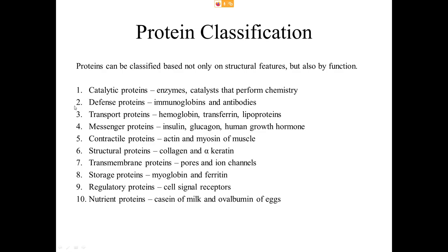Third: transport proteins — they carry things around, like hemoglobin and lipoproteins, which carry lipids in the blood because lipids are not water-soluble and need someone to carry them. Fourth: messenger proteins — protein-based hormones like insulin, glucagon, and growth hormone, which send signals from one cell or area of the body to another. These are small, mostly globular proteins that travel through the blood.